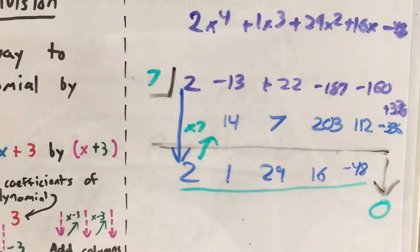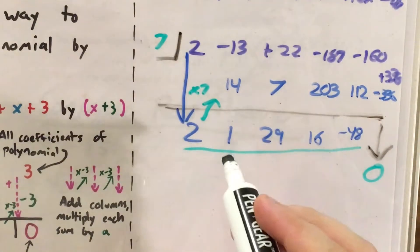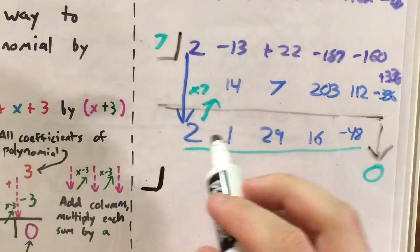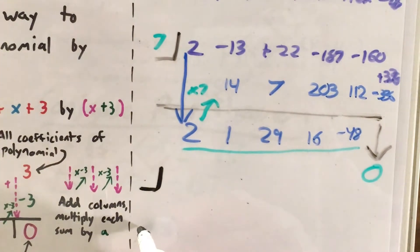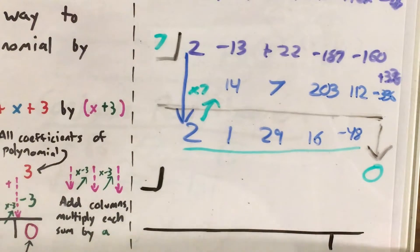Now we get into repeated synthetic division. The idea is that I can take these new coefficients and keep dividing out all of the roots that I know are zeros.